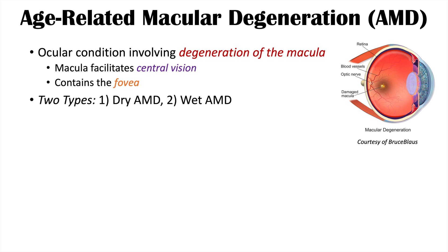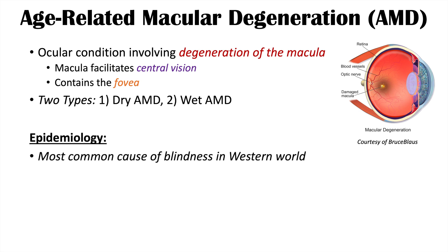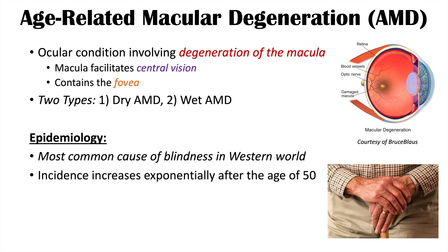There are two types of AMD: dry macular degeneration and wet macular degeneration. We'll talk about both and how they are treated differently. Macular degeneration is actually the most common cause of blindness in the western world. The incidence increases exponentially after the age of 50, with each decade after that seeing a rapid rise in the percentage of cases.